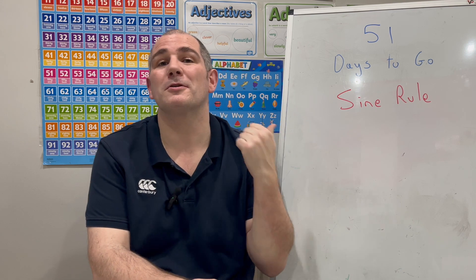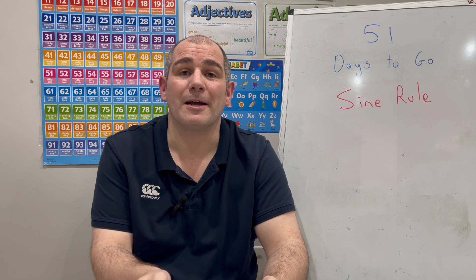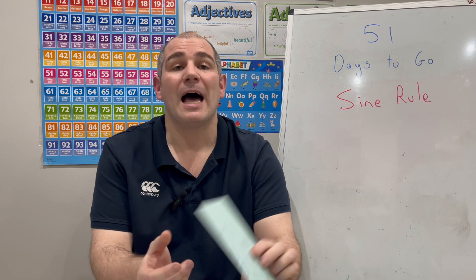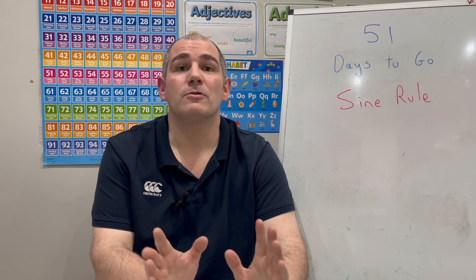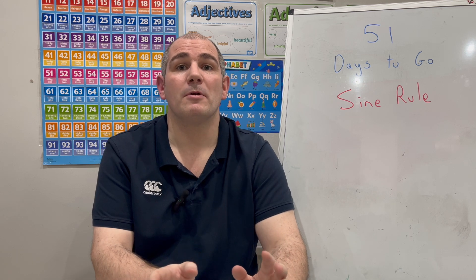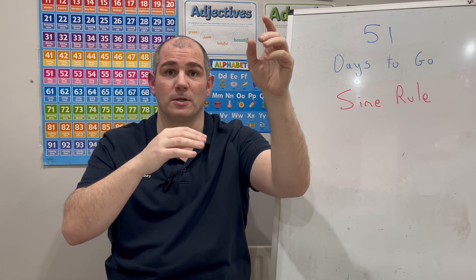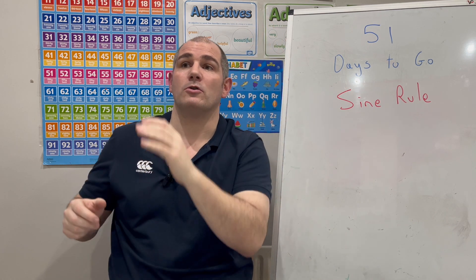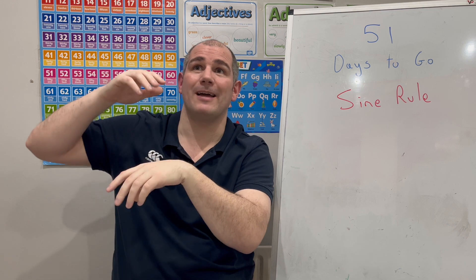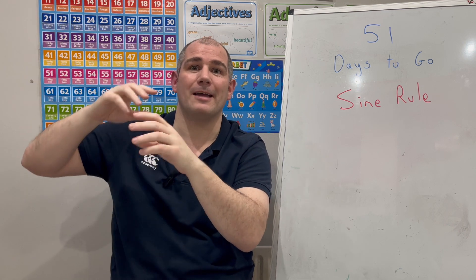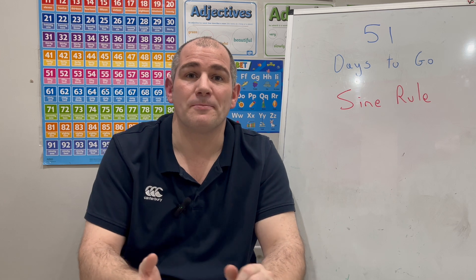Today we're going to be focusing on the sine rule. We're going to be looking at trigonometry for triangles that aren't necessarily right-angle triangles. If you've got the revision card, card number 85 is going to be a useful one for you. The sine rule is really useful, particularly when you've got sides and angles opposite each other — if you've got a side and an angle opposite it and you're trying to find another side or angle, then the sine rule is really useful.